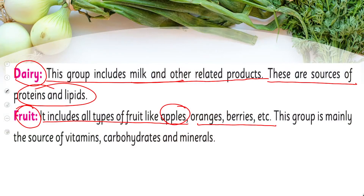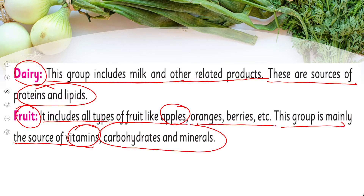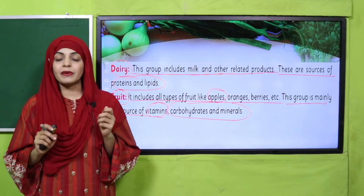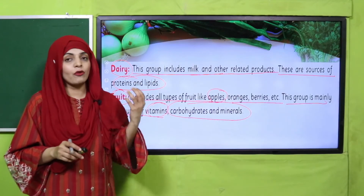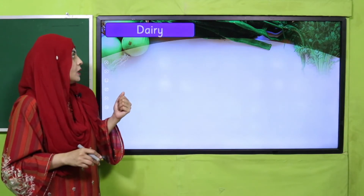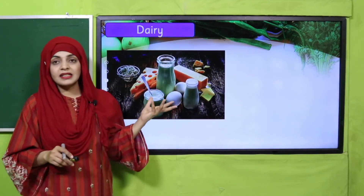Next is fruit — it includes all types of fruit like apples, oranges, berries, etc. This group is mainly the source of vitamins, carbohydrates, and minerals. All fruits fall under this food group.